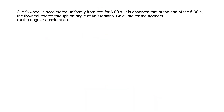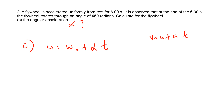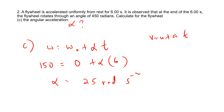Part (c) asks for the angular acceleration alpha. Using omega equals omega naught plus alpha times t: omega naught is zero (starts from rest), omega final is 150 rad s⁻¹, and t is 6 seconds. So 150 equals 0 plus alpha times 6. Therefore alpha equals 25 rad s⁻². That is the final answer.